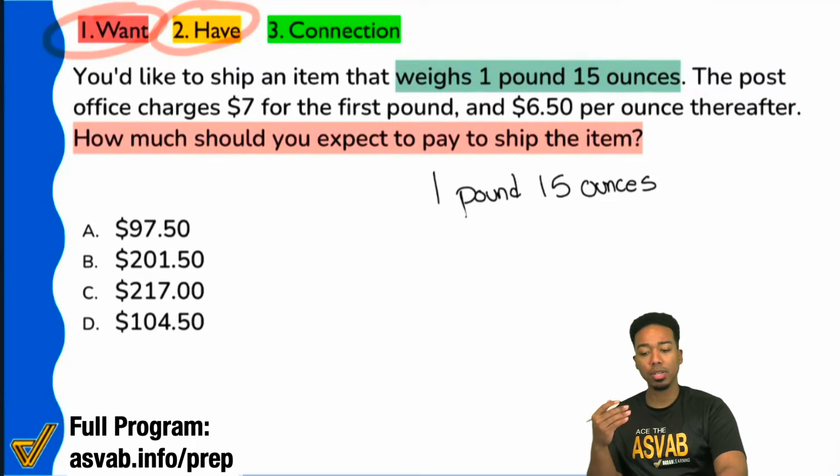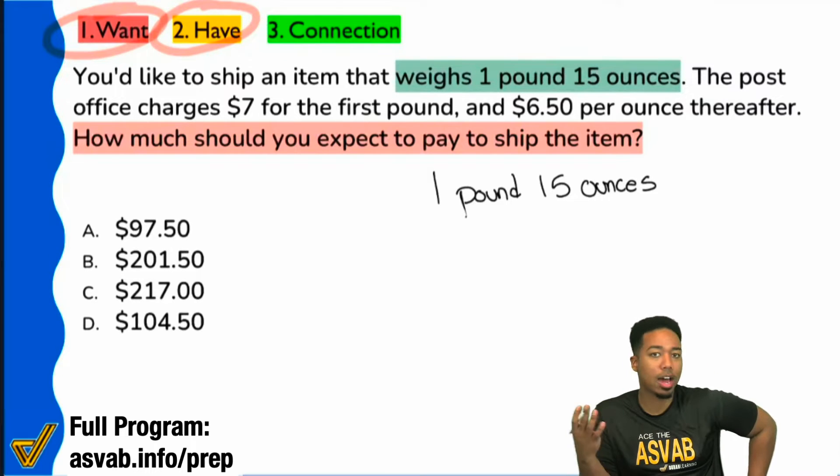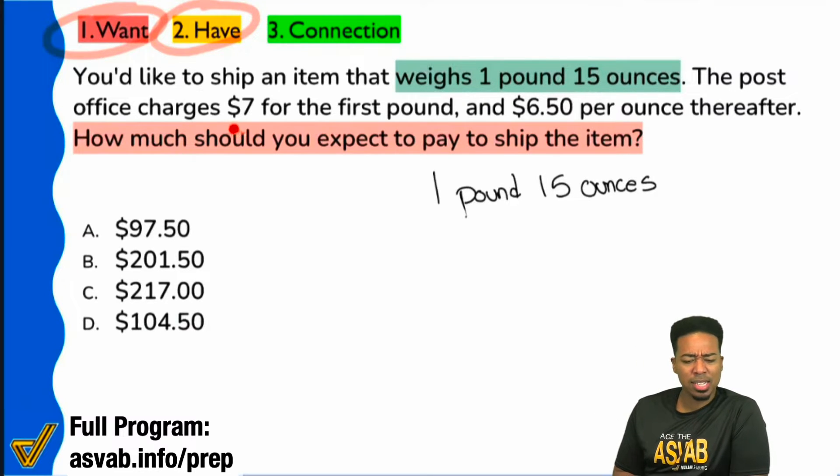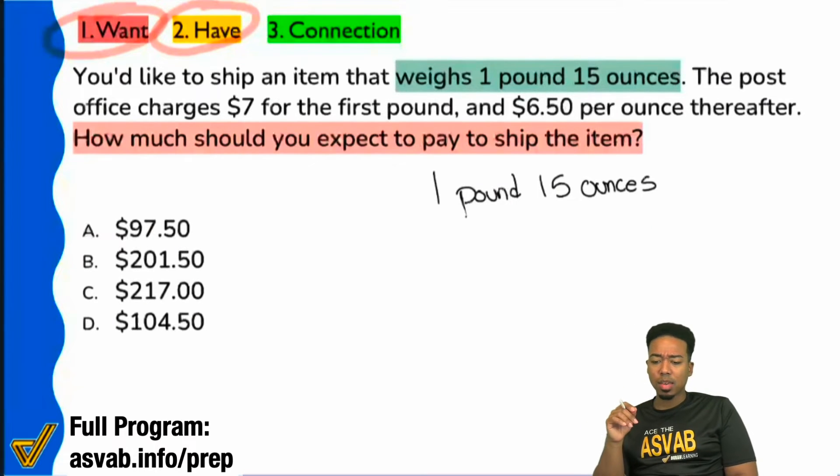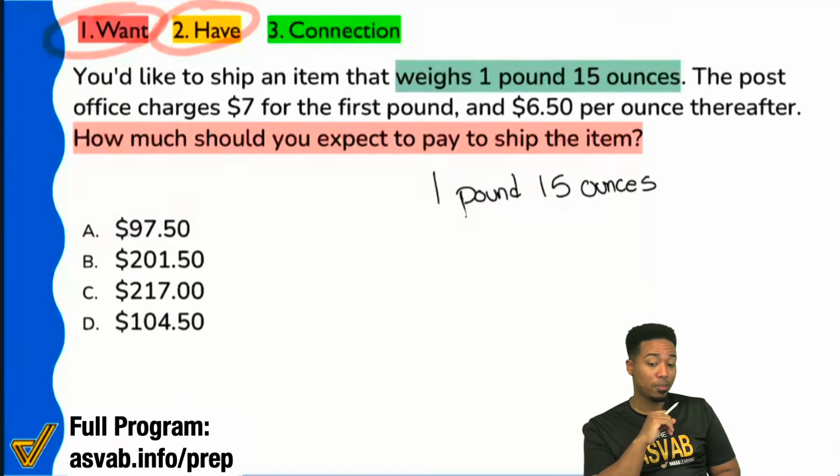So, can somebody just clarify that for the group here? I could obviously just go ahead and tell you, but I want to kind of include you guys in this discussion. What does this mean, right here? $7 for the first pound, then $6.50 per ounce thereafter. What does that mean in your eyes? What does that mean? Because we are comparing the same things in the same way, not quite. Notice that we are actually comparing the same thing in different ways. We're saying that $7 goes towards the first pound, then $6.50 per ounce thereafter. So, there's a different story depending on how you look at it.